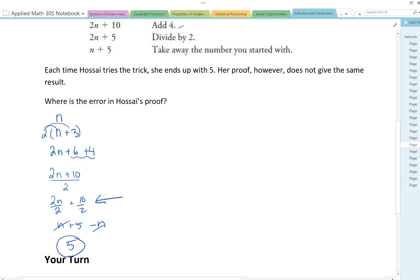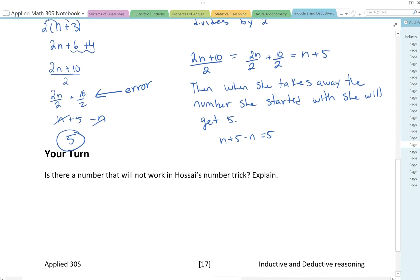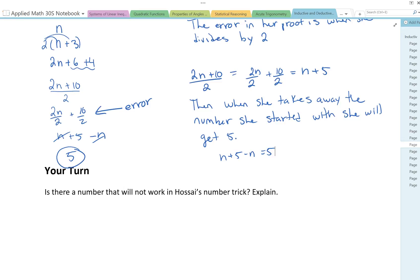We can see that this is where the error is. The error is in this section here, where she only divided the 10 by 2, not the 2n by 2. She's left with an extra n that she didn't need in there. The error in her proof is when she divides by 2. When she takes away the number she started with, she'll get n plus 5 minus n equals 5. Sometimes you write a proof and you just make a little mistake and then it doesn't work out. You're thinking maybe it's an invalid proof, but in fact you just made a little mistake. Is there a number that will not work in her number trick? The answer is no, because the proof is showing that n can be any number and as a result you're always going to get a 5 out of there.